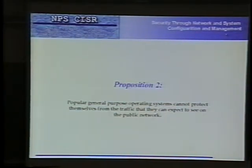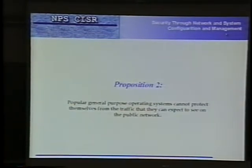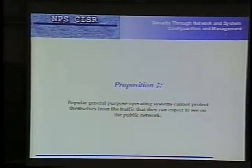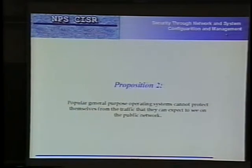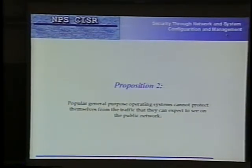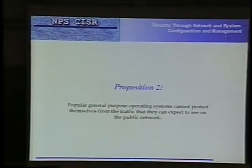Proposition number two: general purpose operating systems — the two popular ones, Windows and Unix — cannot protect themselves from their traffic. They have not been successful at it. You can't expect them to protect themselves, and therefore nice people do not connect them to the public network.